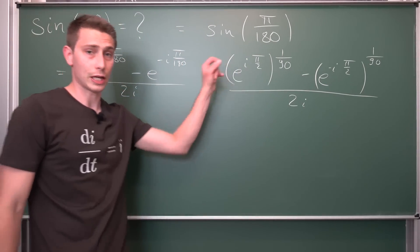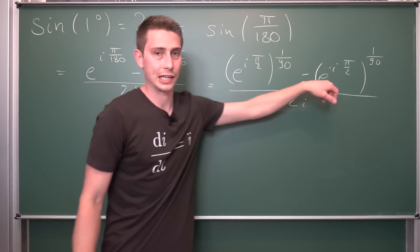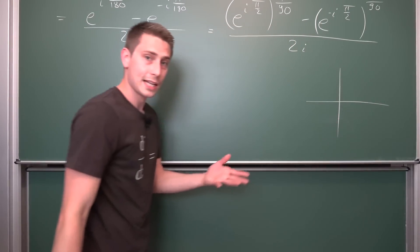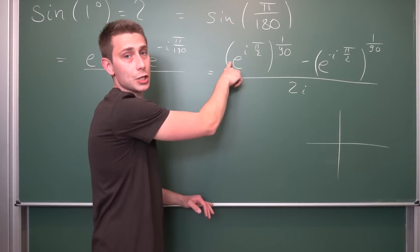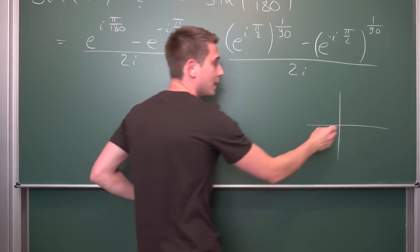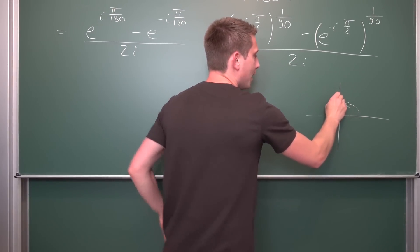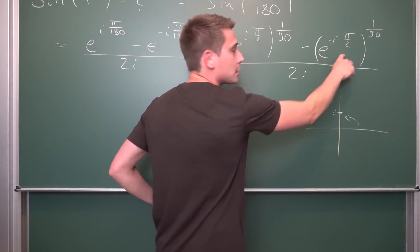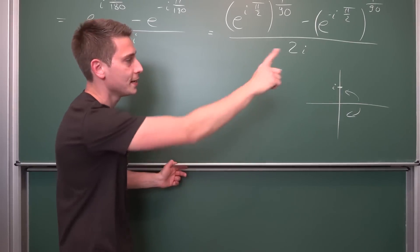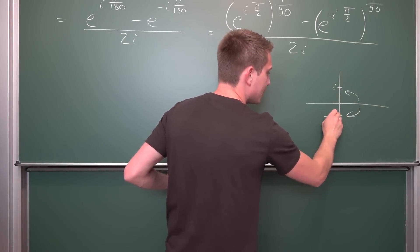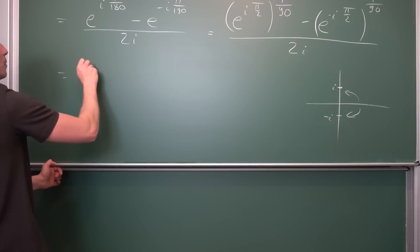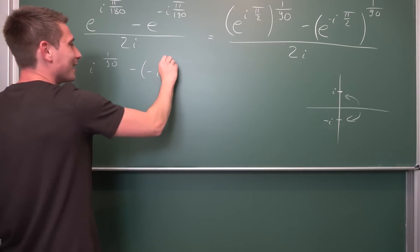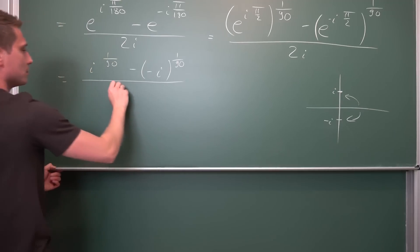Now we can take a look at the complex plane, because we can rewrite e to the i pi over 2 and e to the negative i pi over 2, which are complex conjugates, into imaginary units. If we go pi over 2 upwards in the complex plane, we land exactly at i. Meaning e to the i pi over 2 is nothing other than i — a really good identity. Going the other way around, negative pi over 2 radians, we land at negative i. So overall this becomes i to the 1 over 90th, minus negative i to the 1 over 90th, all divided by 2i.